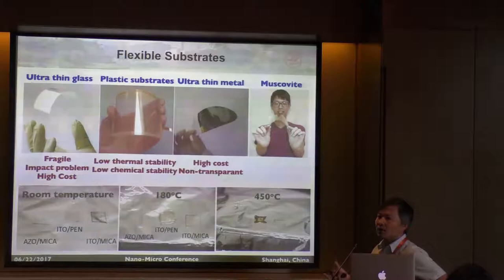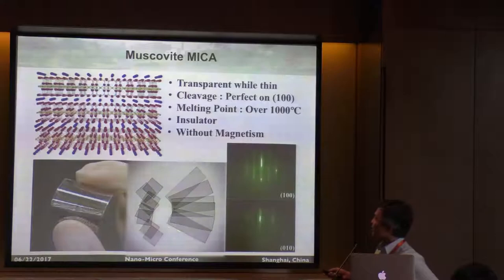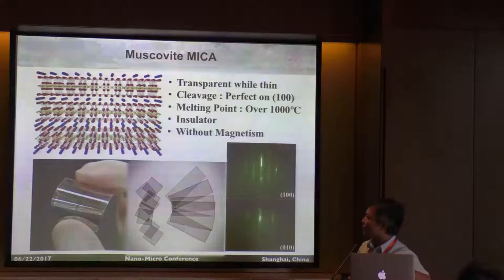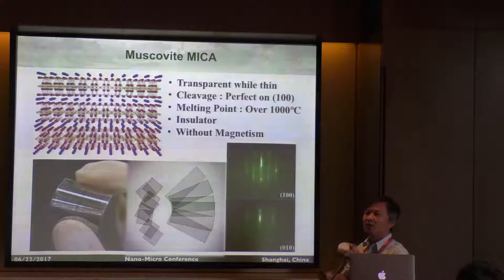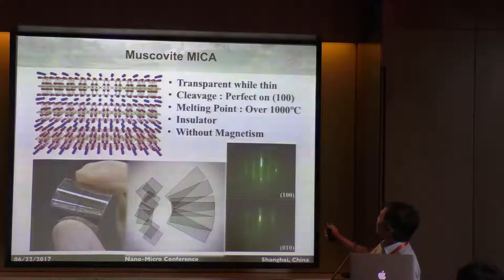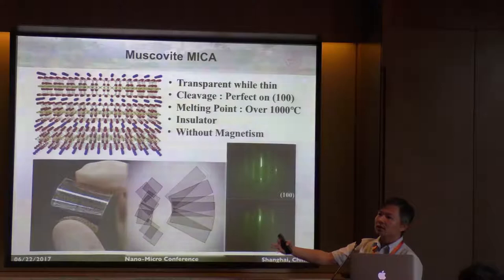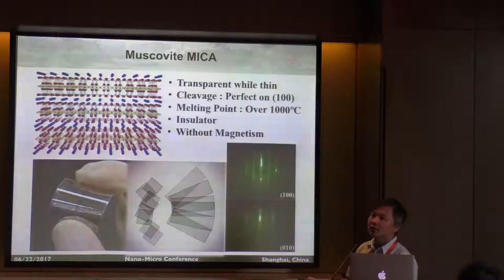When we pick up muscovite substrates, the next question is what materials we can put on top. Let me give a quick introduction. Muscovite substrates can be bought from companies — here I have a 2-inch wafer, and you can also get 4-inch wafers. The melting temperature is very high. Because it can cleave perfectly in the (001) direction, you can get a very smooth surface. It is a layered material, like graphene but a stack of oxide, so you can peel it and get a very clean surface. Everything is crystalline — single crystalline, not amorphous.